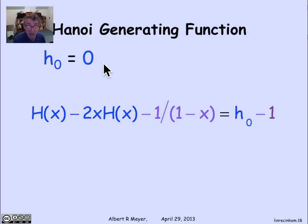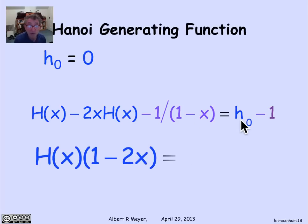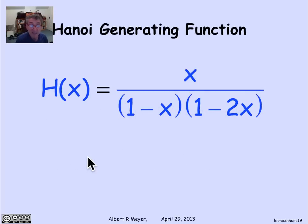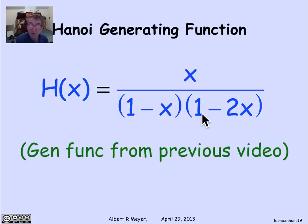At this point, I might as well use h0 and remember that it's 0. So this becomes just a minus 1 over here. And now we do a little bit of algebra simplification. I factor out h of x and I transpose minus 1 over 1 minus x to be 1 over 1 minus x minus 1. And if you put the 1 over the 1 minus x, you wind up with h of x times 1 minus 2x is equal to x over 1 minus x. Now just divide through by 1 minus 2x and we wind up with our final solution for h of x. There is the generating function for the Hanoi moves. h of x is x over 1 minus x times 1 minus 2x.